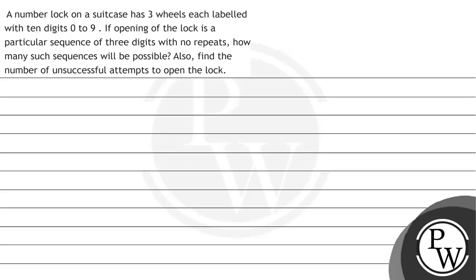Hello Bachchun, let's read the question. The question says a number lock on a suitcase has 3 wheels each labeled with 10 digits 0 to 9.